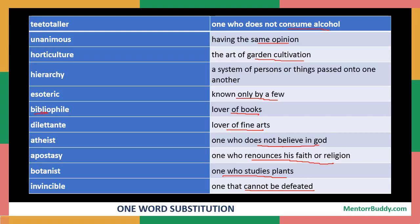Students, like this you will find in any good English grammar book a list of one word substitutions which are generally a part of vocabulary. You have to learn as many words as possible related with one word substitution, and I am sure the words which I have discussed with you right now are really going to be very helpful for you. Thank you so much for watching this video and stay tuned for more videos like this on verbal ability.